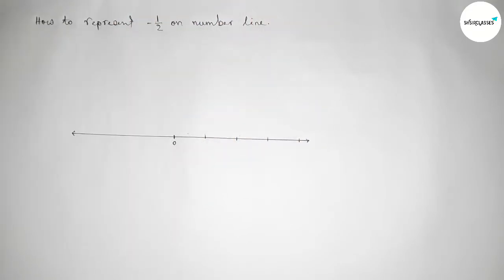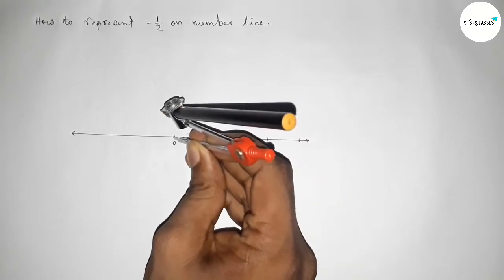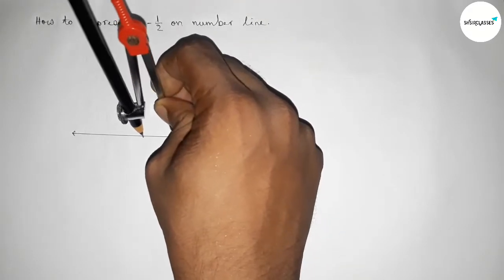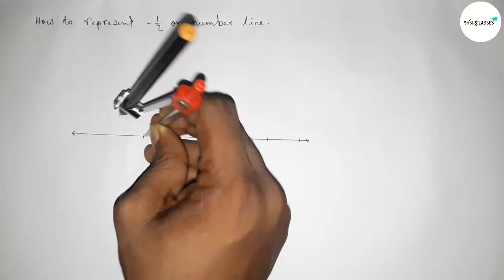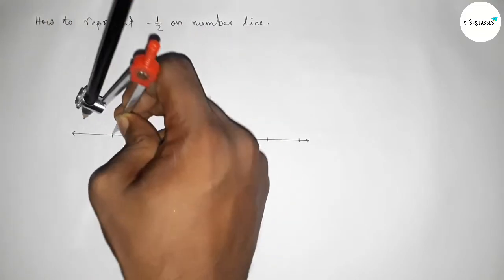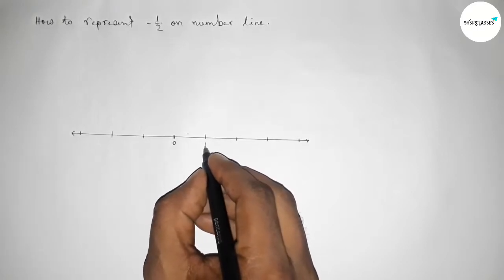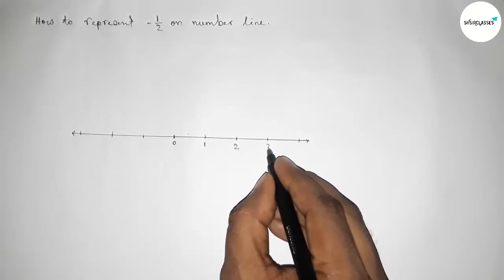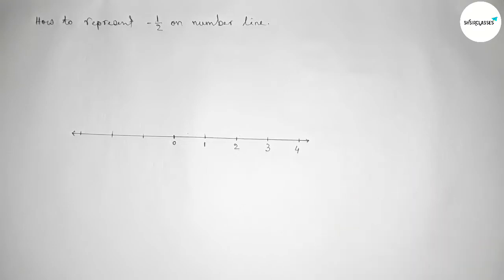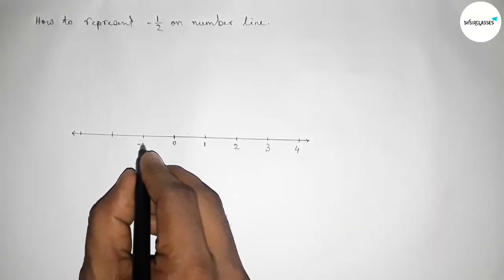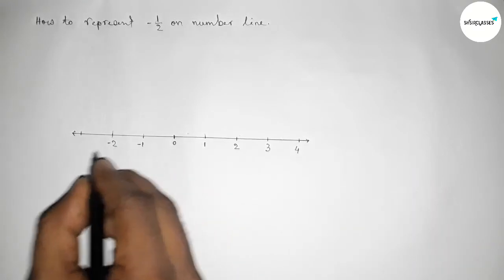By this way we have to first mark the numbers on the line so then we can get a number line. Here, this side: 1, 2, 3, 4 and continuous, and this side: minus 1, minus 2, and minus 3 and continuous.